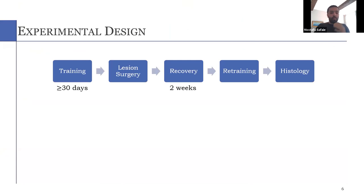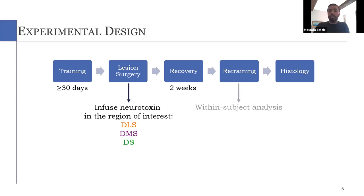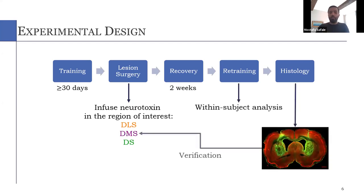So our experimental design is here. We trained animals for at least 30 days, making sure that the performance is stable, and then we lesion different parts of the dorsal striatum, dorsolateral striatum, dorsomedial striatum, and eventually the entire dorsal striatum. We waited two weeks for the recovery, and then we retrained animals, and finally we performed histology to verify the location of the lesion, and also we quantified the volumetric size of the lesion.